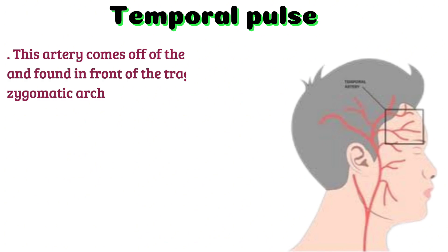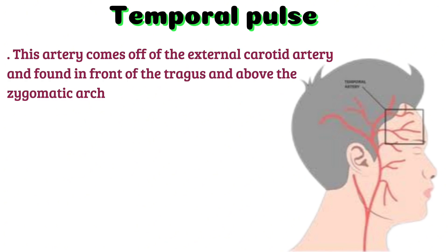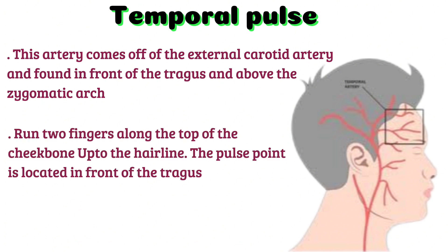Temporal pulse: this artery comes off of the external carotid artery and is found in front of the tragus and above the zygomatic arch. This pulse point is assessed during the head-to-toe assessment of the head. To find the temporal pulse, run two fingers along the top of the cheekbone up to the hairline; the pulse point will be located in front of the tragus. The temporal pulse is somewhat less commonly assessed but should be assessed during a comprehensive examination of the head.